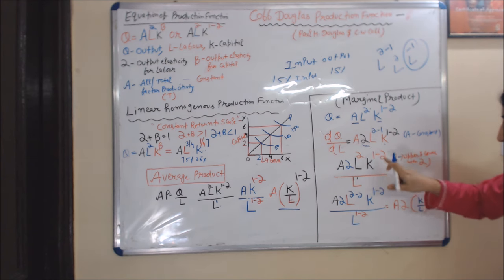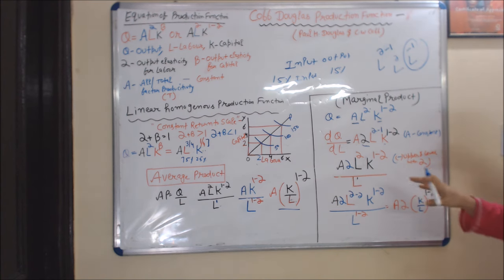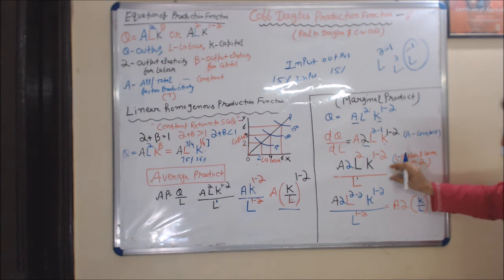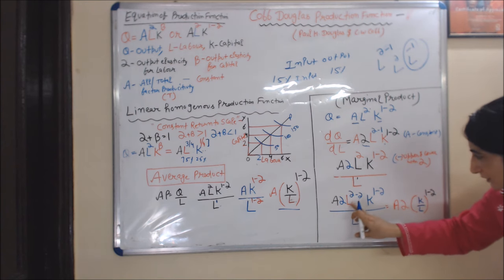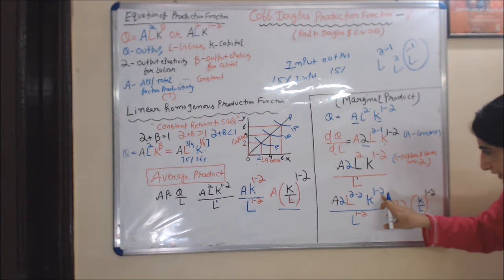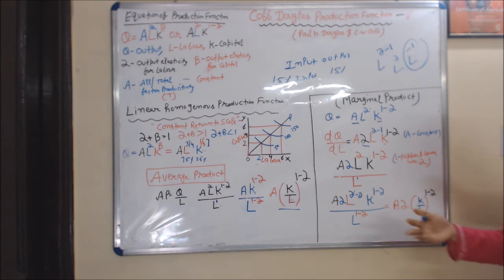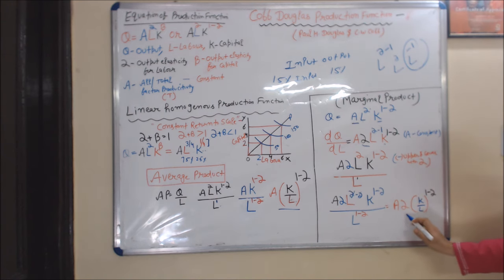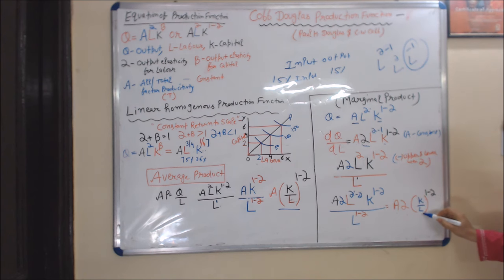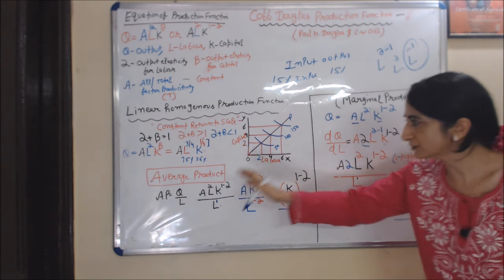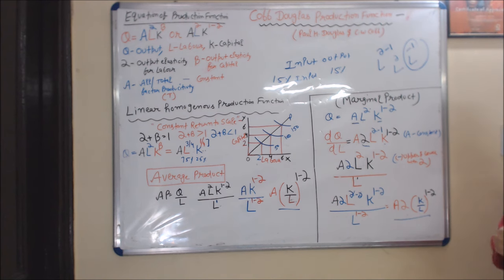Our equation becomes A α L^α K^(1−α) / L. We then cancel the L^α terms in the numerator and denominator, giving L^(1−α) below. Taking (K/L) common with power (1−α), our final marginal product equation is: MP = A α (K/L)^(1−α). We have now calculated both average product and marginal product.